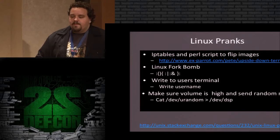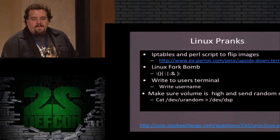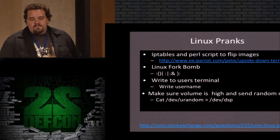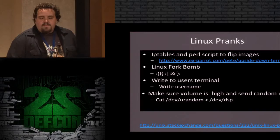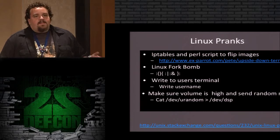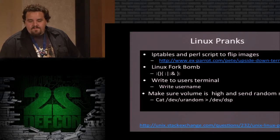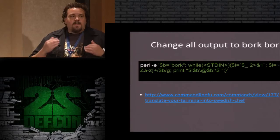Now for Linux pranks. There's a cool Perl script that takes every image the user browses to and turns it upside down. We've got a Linux fork bomb to take the system to a crawl. We can write to the user terminal. If the system is local, you can cat random data to the computer bell sound — they're connected doing their work and suddenly garbage noise starts coming out of their computer. And there's a cool prank that turns everything in the terminal to 'bork bork' — they type a command and all the output is just bork bork bork, properly formatted but completely in bork.